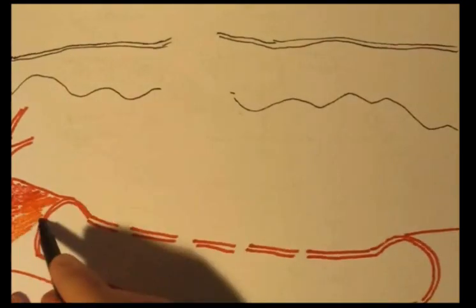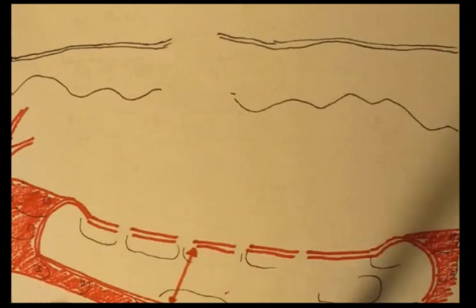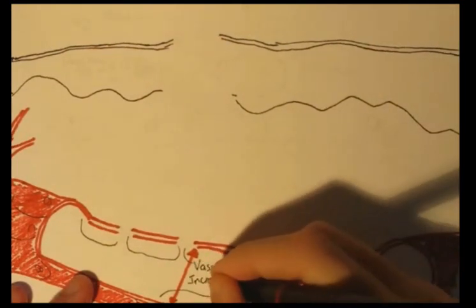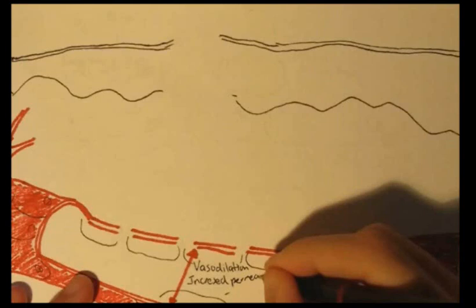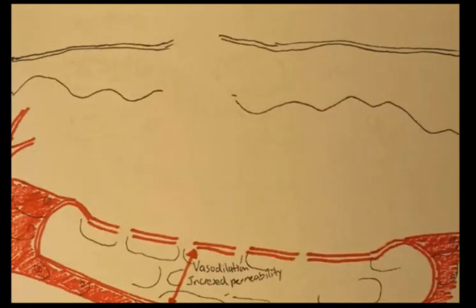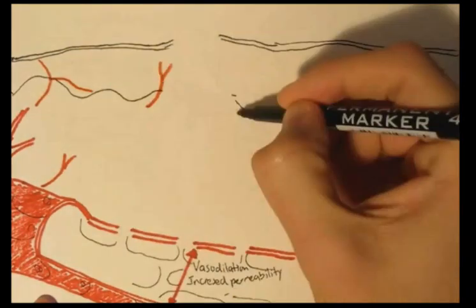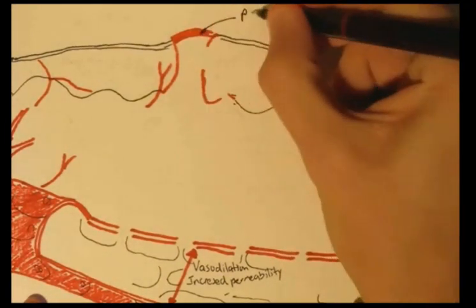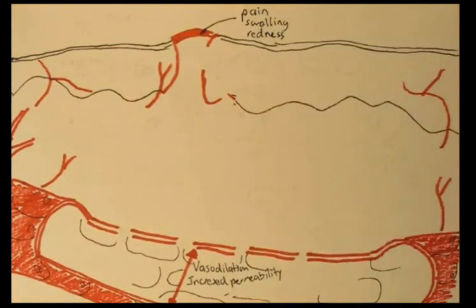The histamine from mast cells caused vasodilation and increased the permeability of the vessel walls. All the blood rushing in causes the signs and symptoms of inflammation: pain, swelling, and redness. The coagulation and healing process also begins.